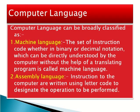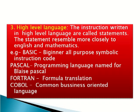Computer language. Computer language can be broadly classified as: machine language, assembly language, and high-level language. The set of instruction codes, whether in binary or decimal notation, which can be directly understood by the computer without the help of a translating program, is called machine language. In assembly language, instructions are written using letter codes to designate the operation to be performed. In high-level language, the instructions written are called statements, which resemble more closely to English and mathematics. Please refer the slide for examples of high-level language.